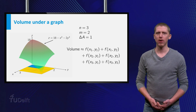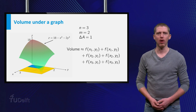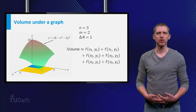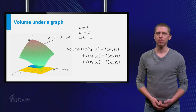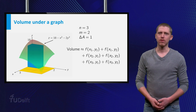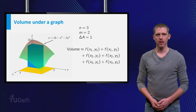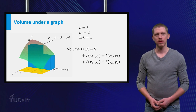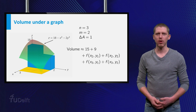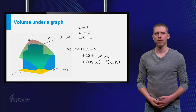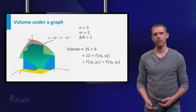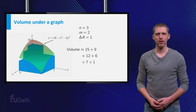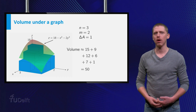Let us start with calculating the volume of the box above the first rectangle R_11. As I can choose any point in this small rectangle, I prefer to take the top right corner, which gives the point (1,1) and a volume of 15 for that box. Putting this in the formula gives us the first of the 6 terms we need. The second box above R_12 has a volume of 9, and the third box above R_21 has a volume of 12. The fourth, fifth and sixth boxes have volumes of 6, 7 and 1. Summing these volumes gives a total of 50.